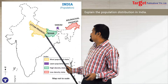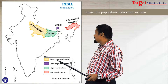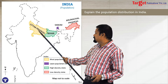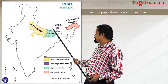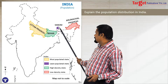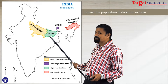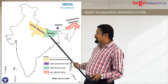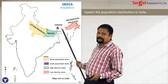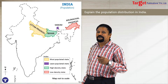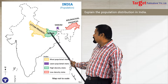Here you can show the most populated state, that is UP, then the least populated state, that is Sikkim, then the densely populated state Bihar, and low density state Arunachal Pradesh.